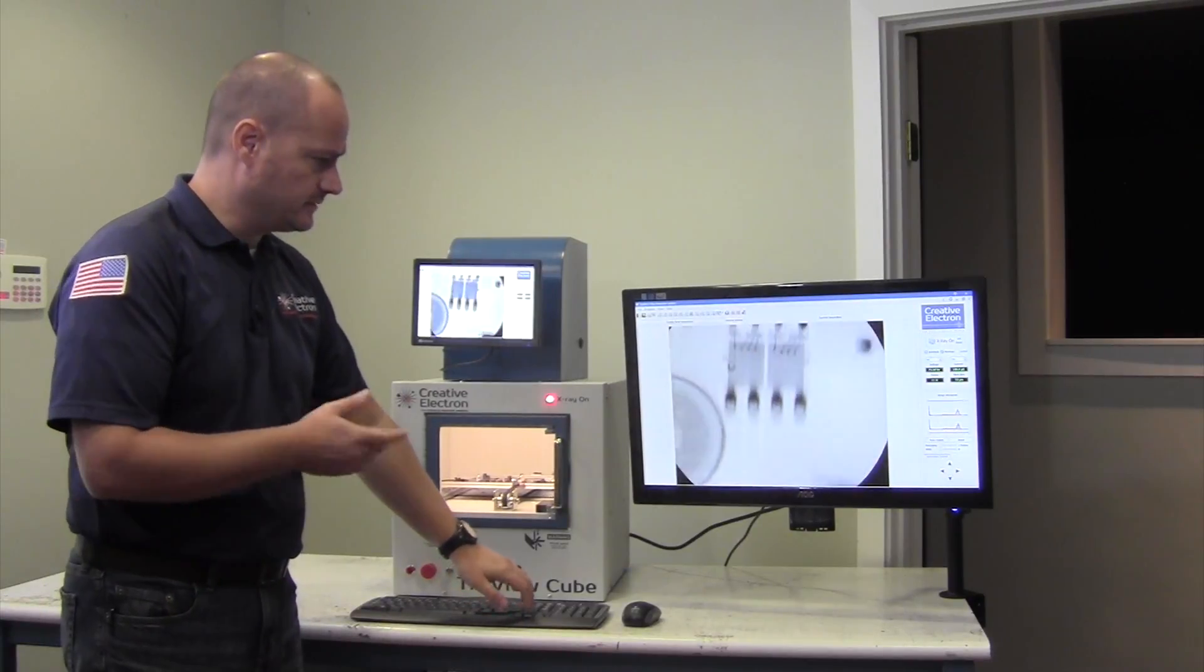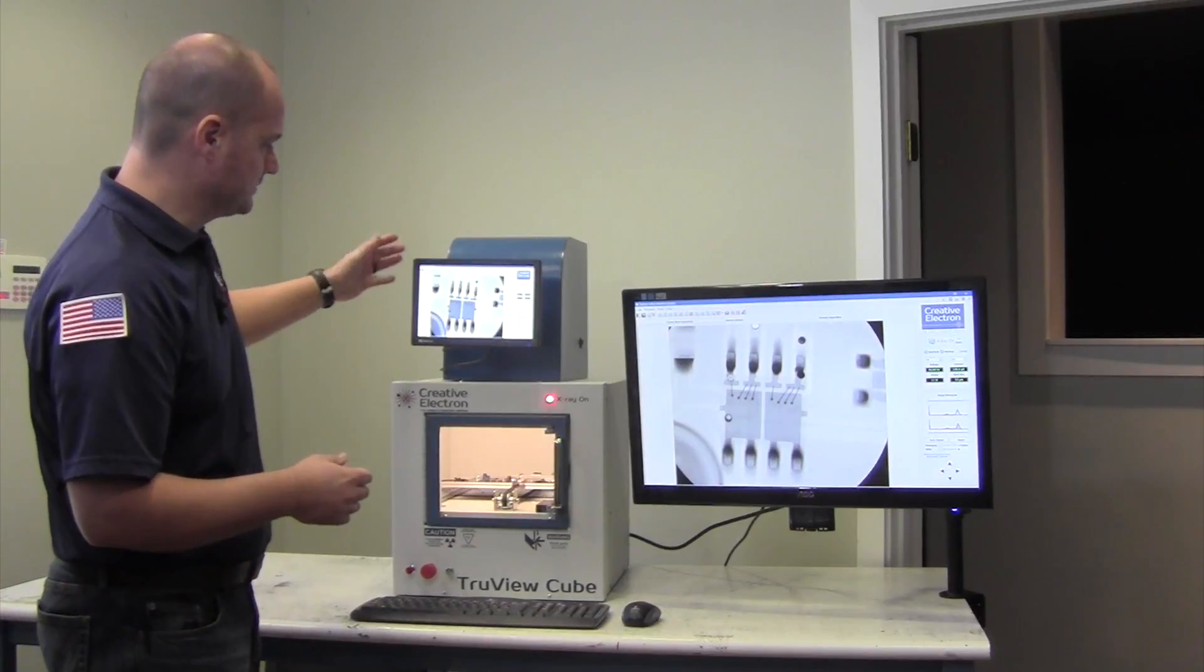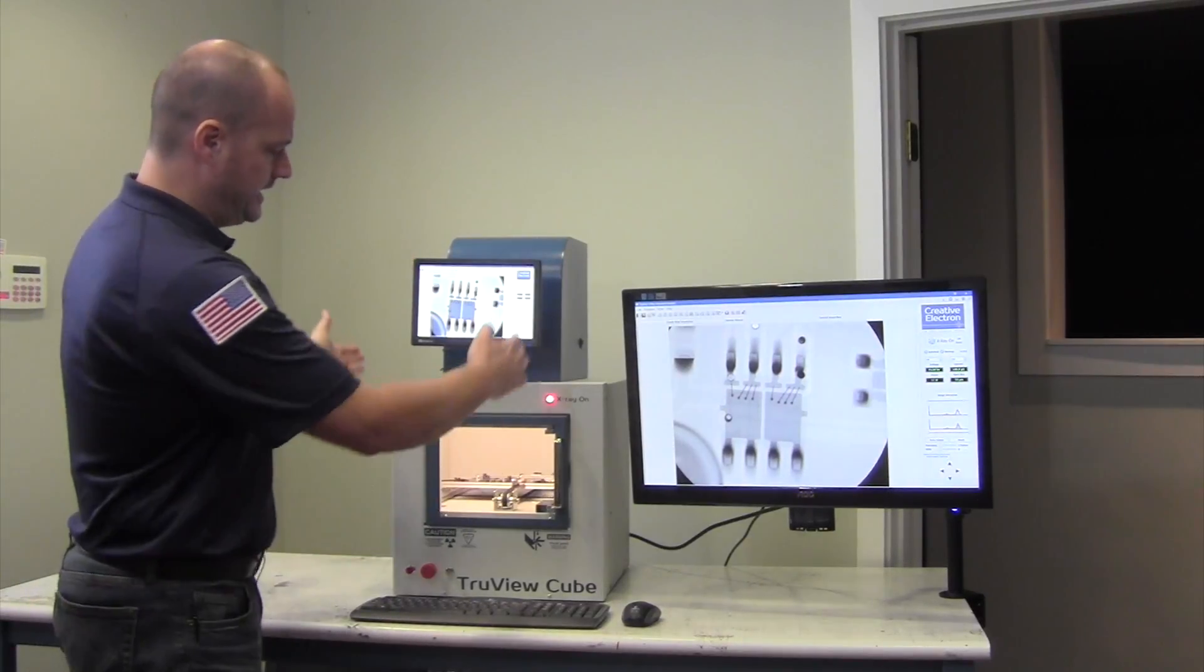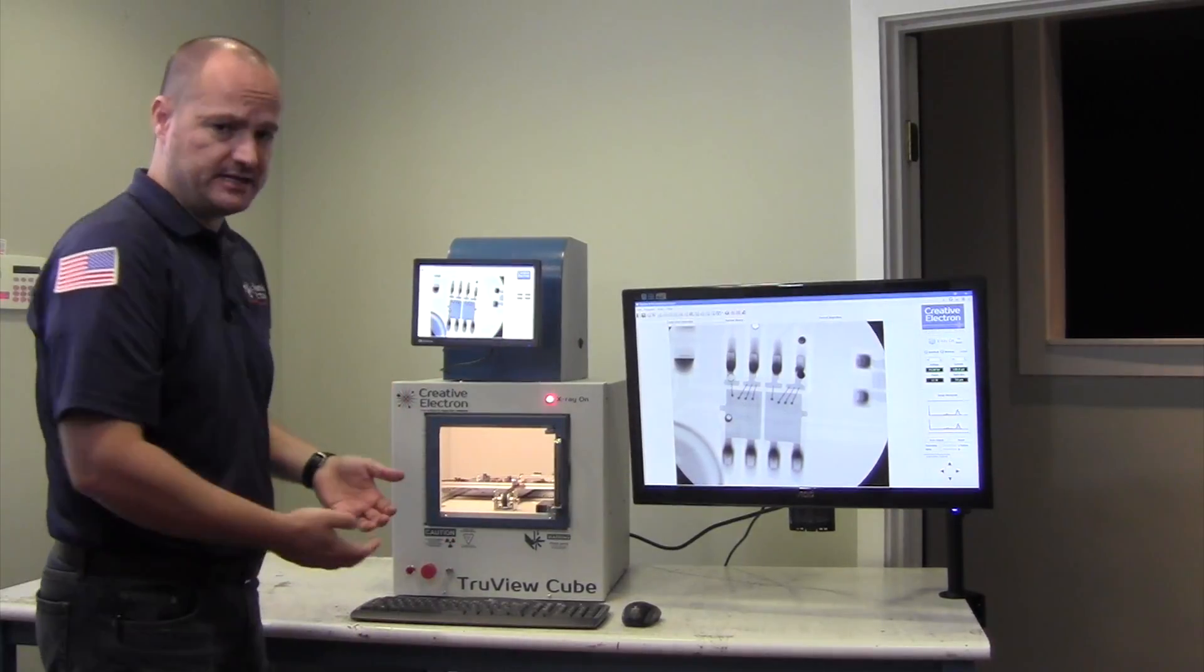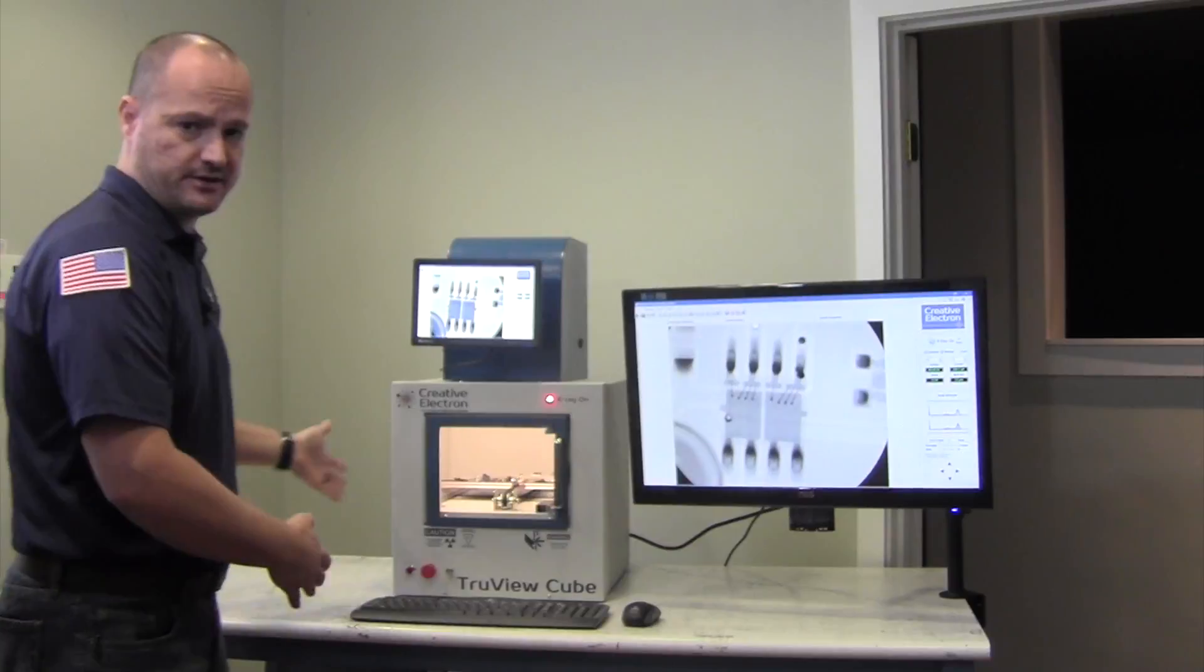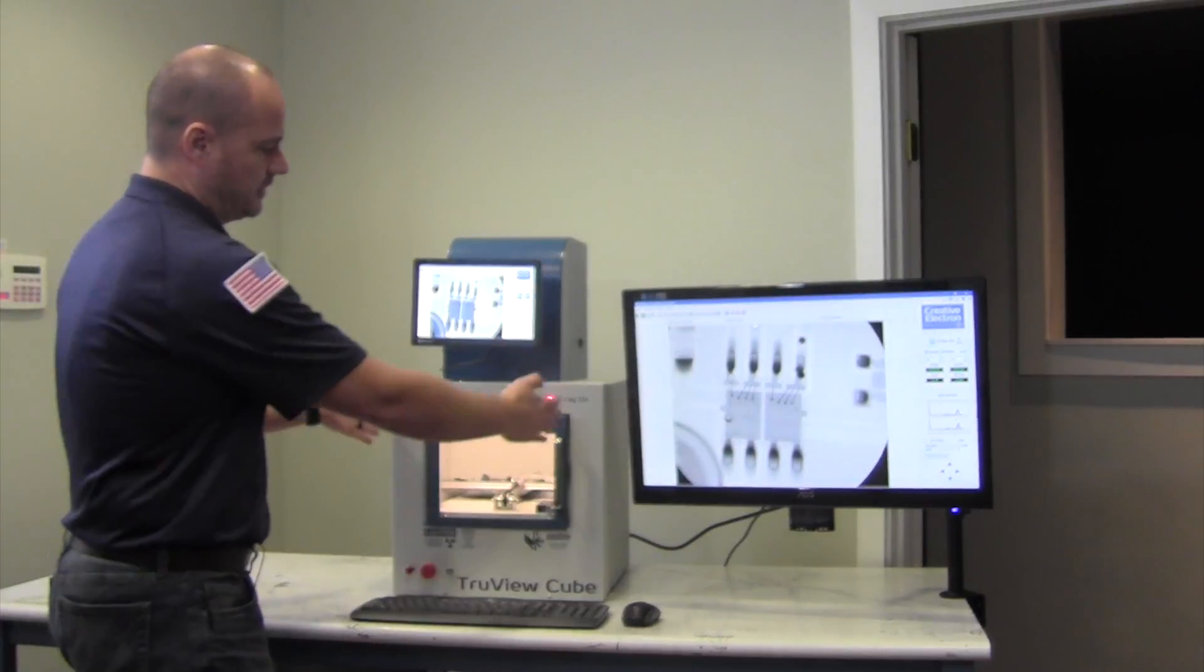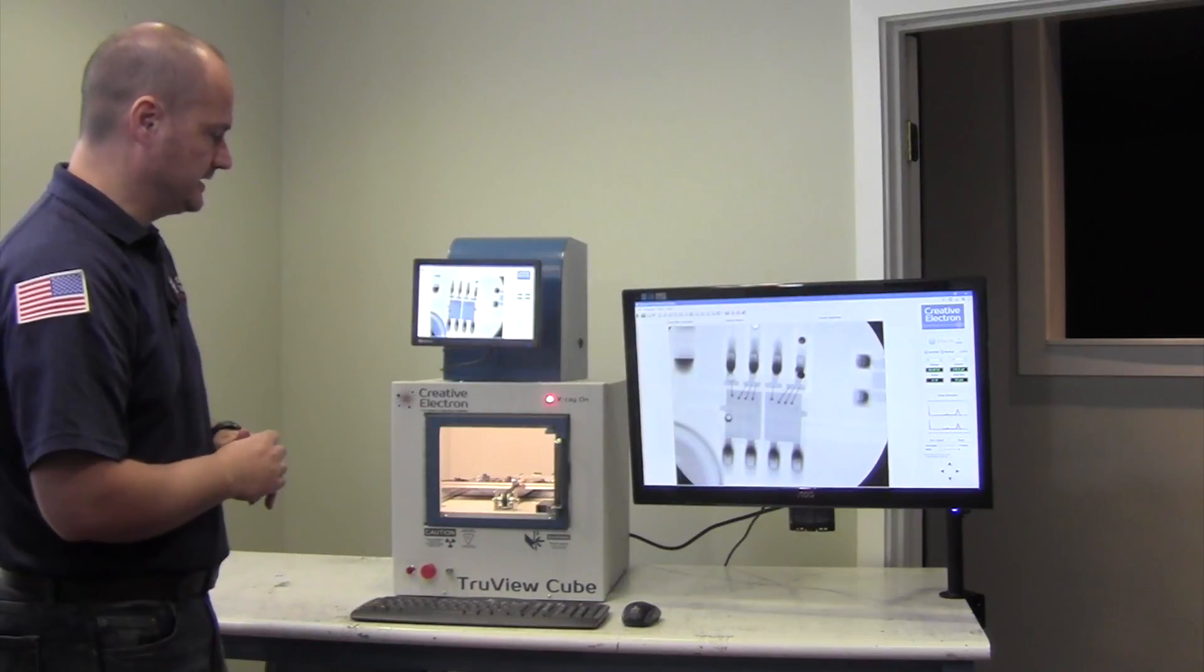As you can see here, image quality is fantastic. It comes with a small monitor which allows you to have a fully functional X-ray inspection system in a very small footprint. As you can see here, this is a six-foot table and this only occupies 16 inches of that working area.